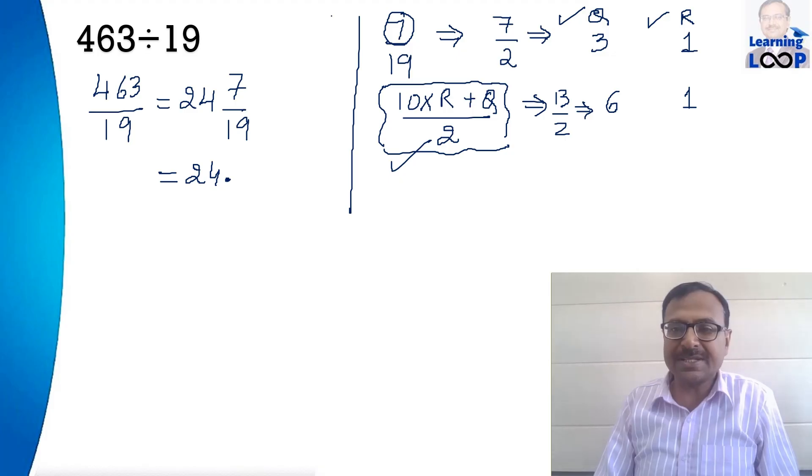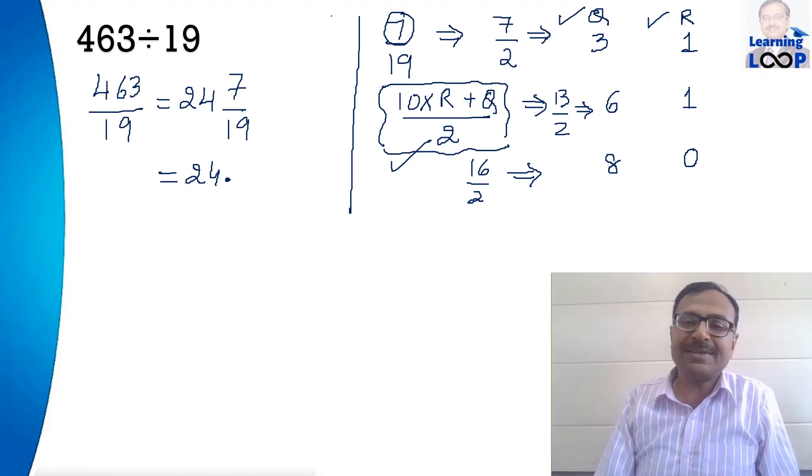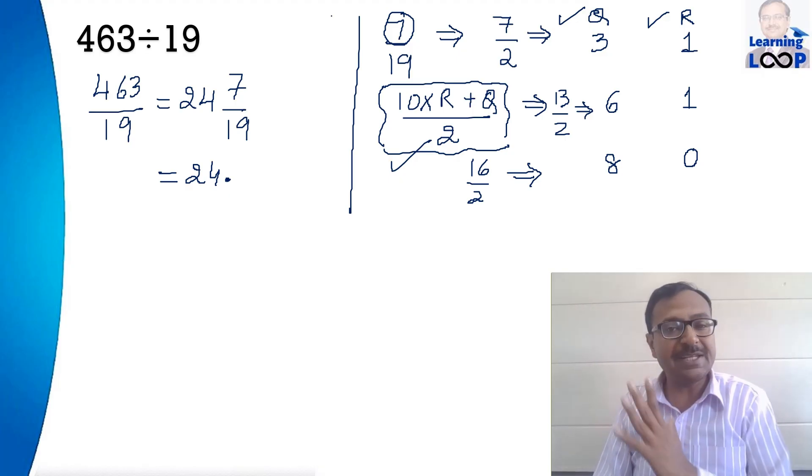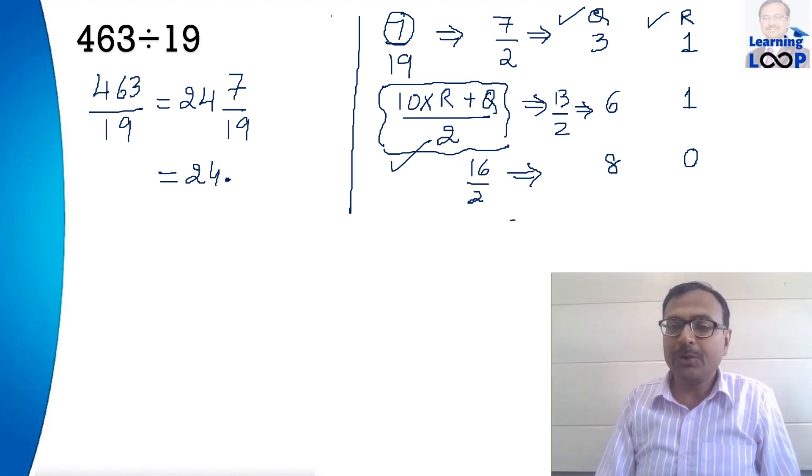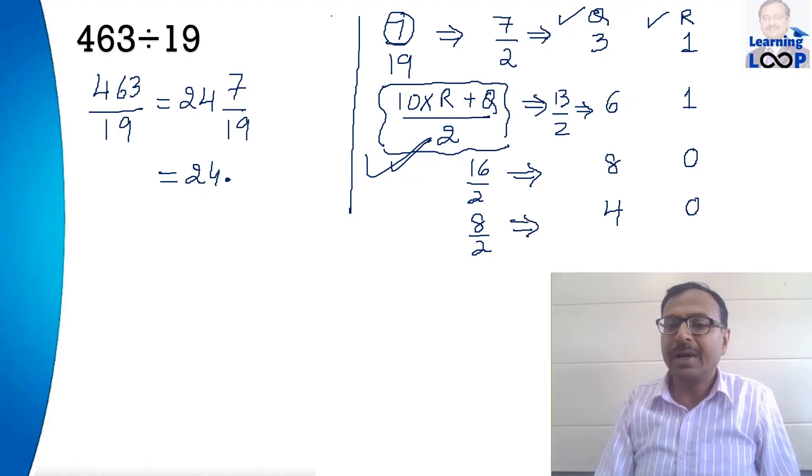And now you can put 6 and 1 again in this formula you will get 10 times 1 which is 10 plus 1 is 16. So you get 16 by 2 and when you divide 16 by 2 you will have a quotient 8 and a remainder 0. Now you can carry on this method you can find as many steps you want but if you do the next step you put 8 and 0 in this formula again you will get 8 upon 2 which is 4. So 4 and obviously the remainder will be 0 and 4 upon 2 will give you 2 and the remainder will be 0 again.